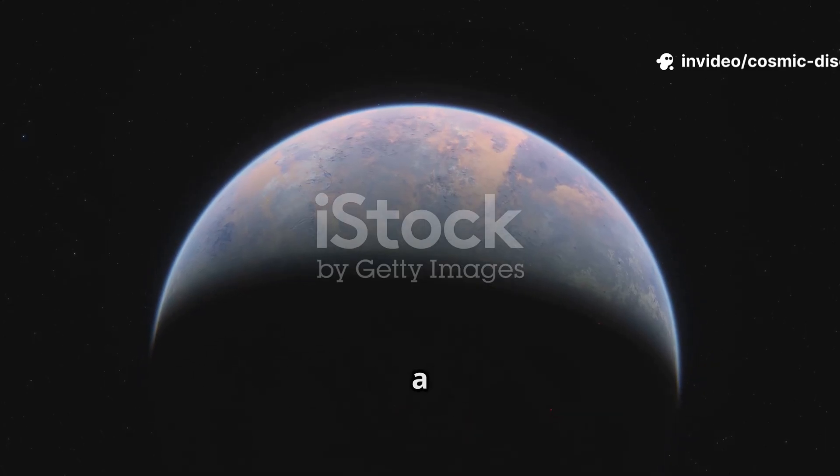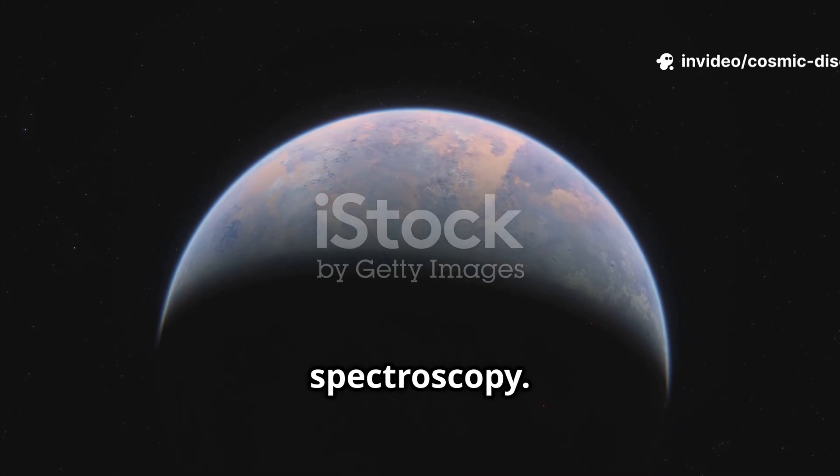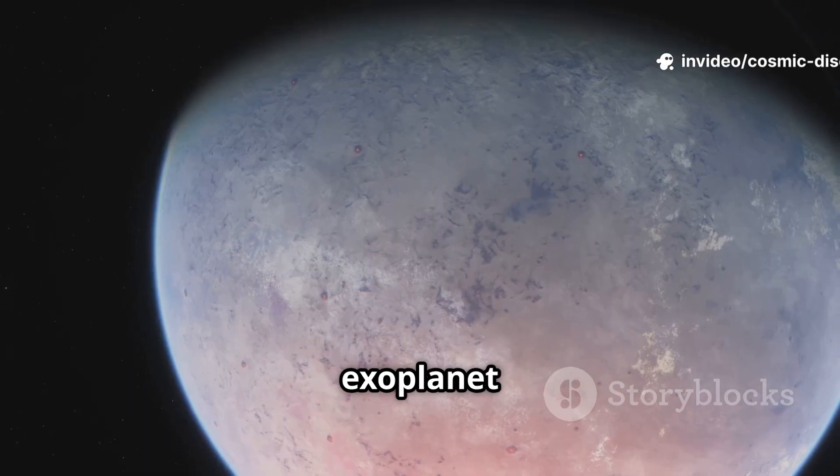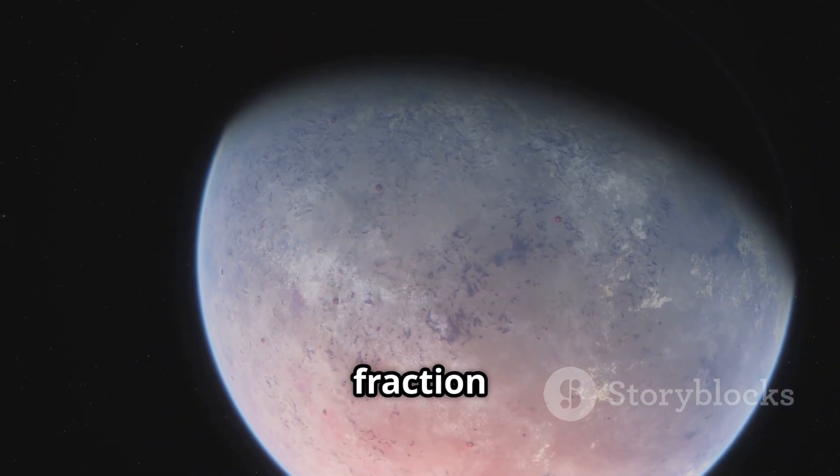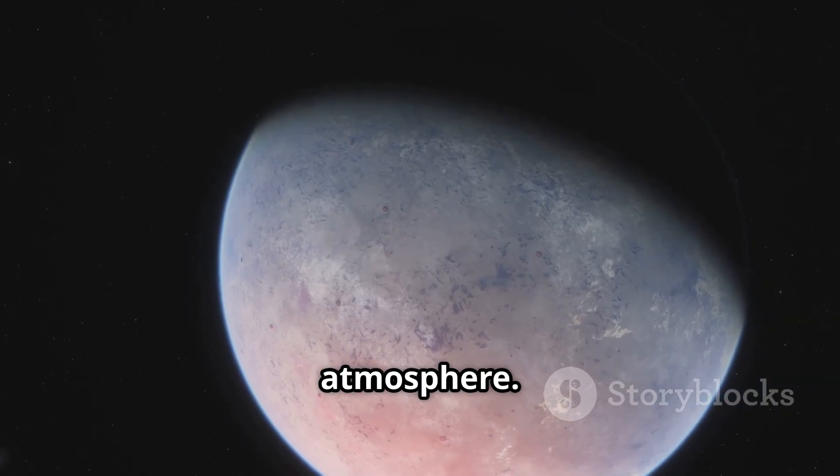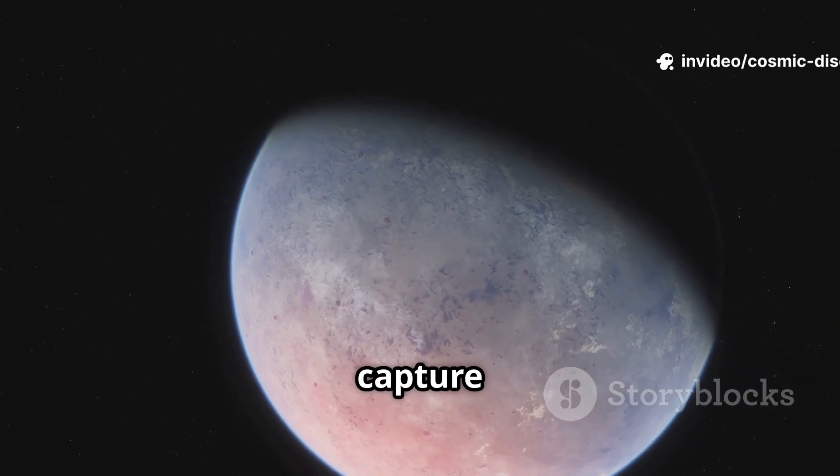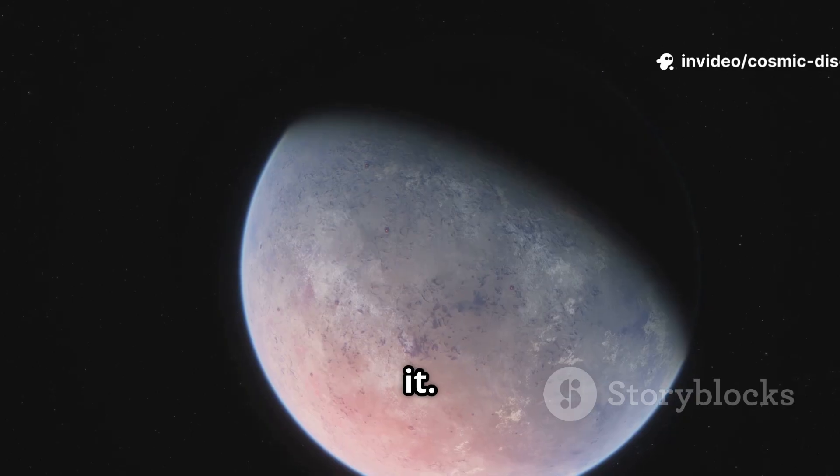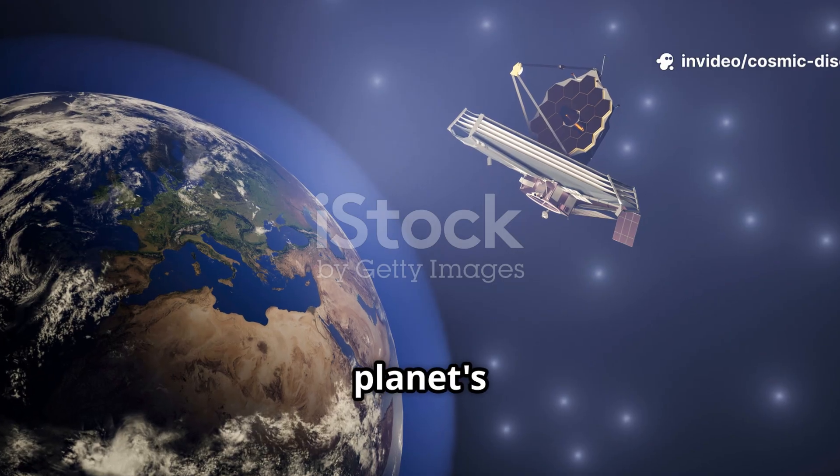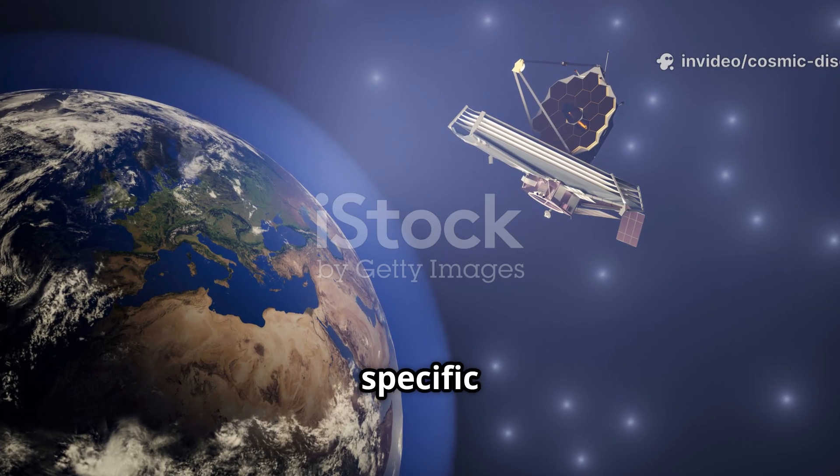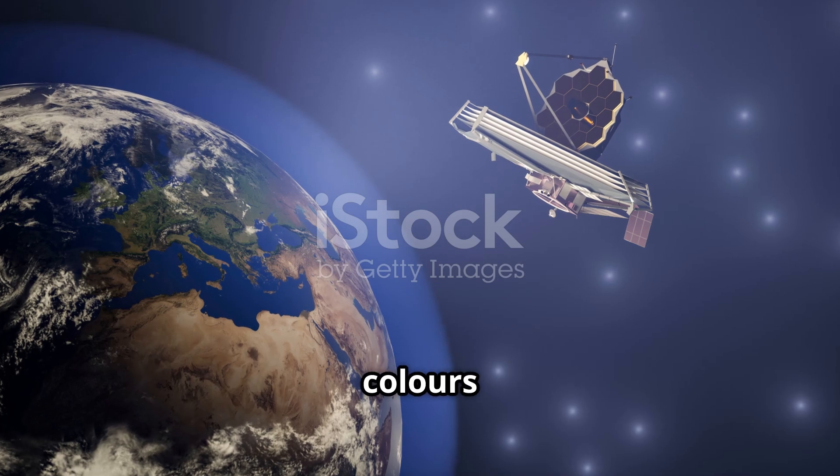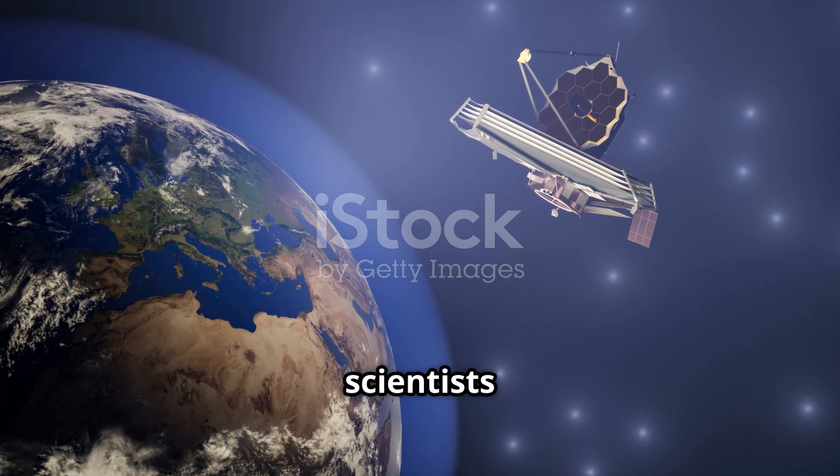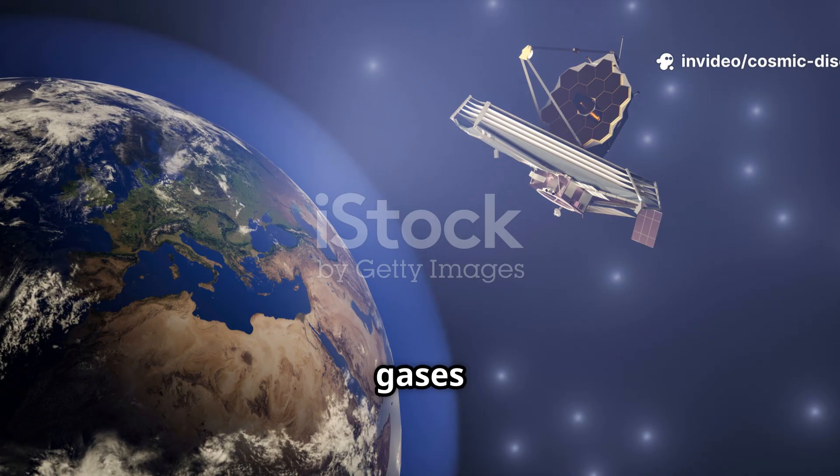Webb is uniquely equipped to answer these questions. It does so by using a technique called transit spectroscopy. When an exoplanet passes in front of its star from our point of view, a tiny fraction of the starlight filters through its atmosphere. Webb's instruments can capture this light and analyze it. Different molecules in the planet's atmosphere absorb specific wavelengths, or colors, of light. By looking at which colors are missing from the starlight, scientists can determine what gases are present.